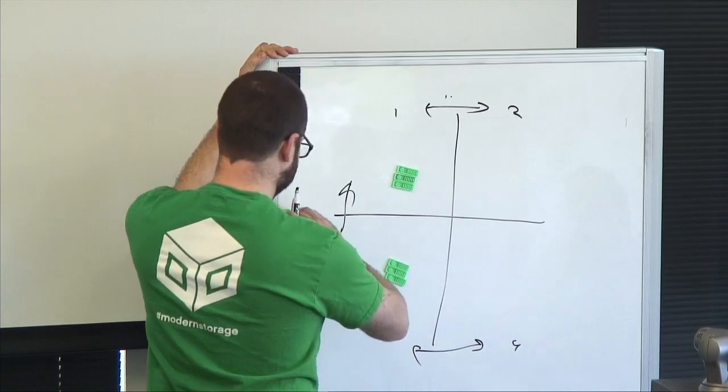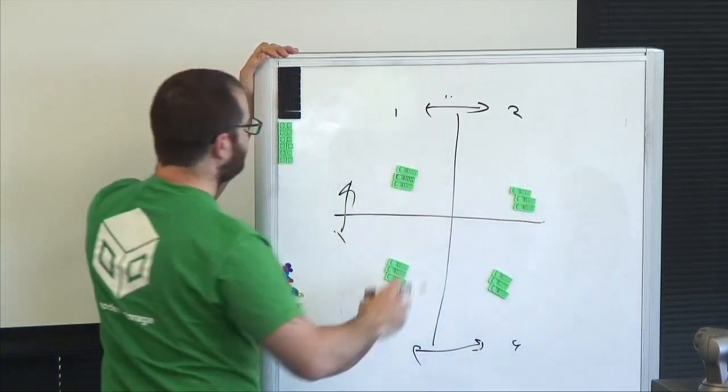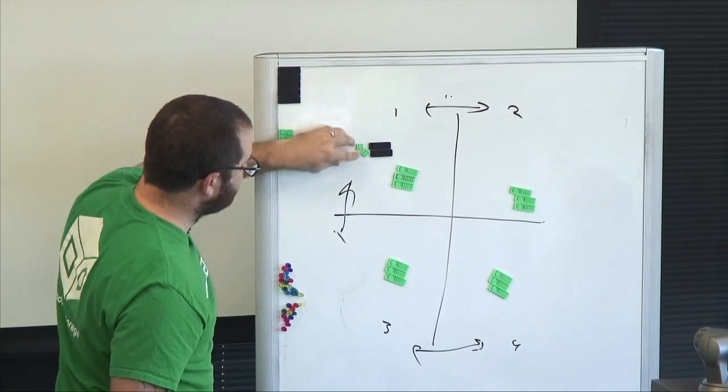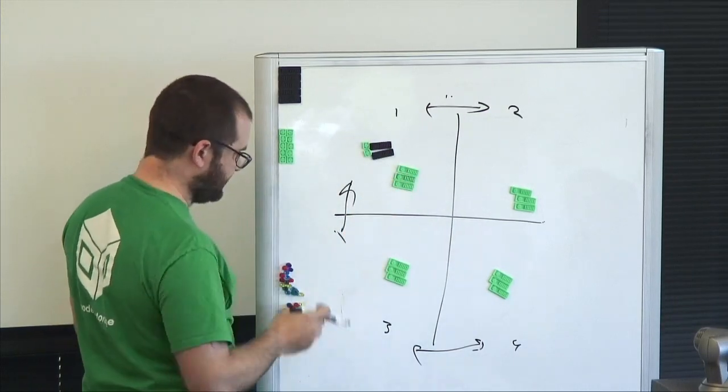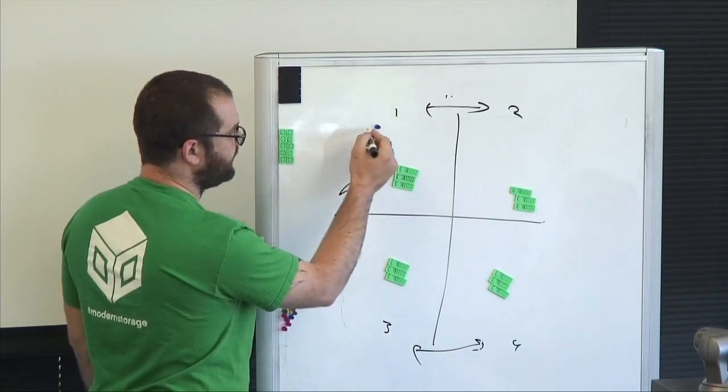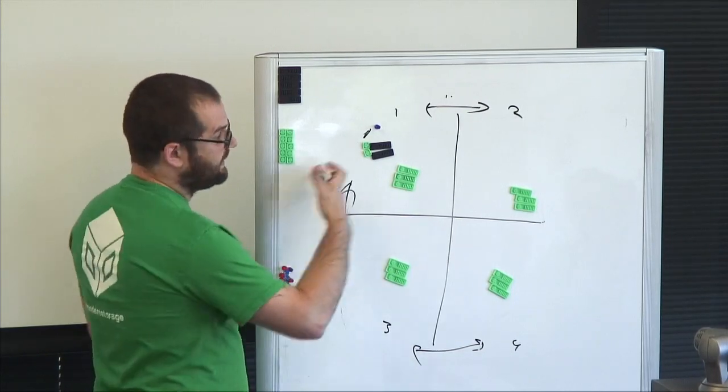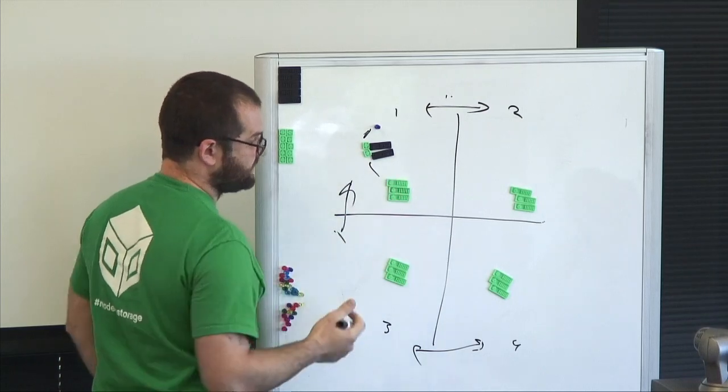Each data center has a cluster with compute and proxies. VMs access the local proxy, which is latency-aware of where the correct IO should go, so IO goes to the local DC.